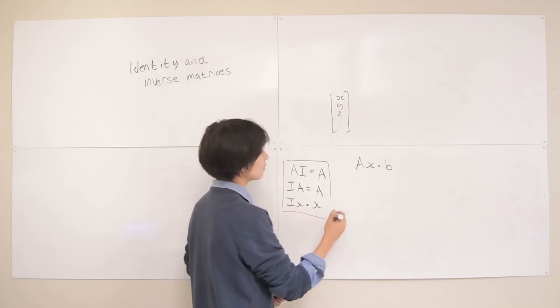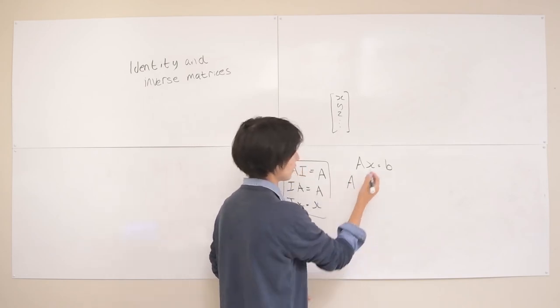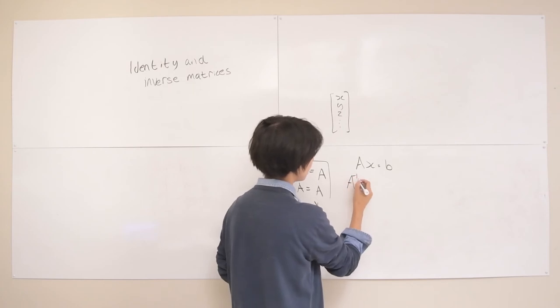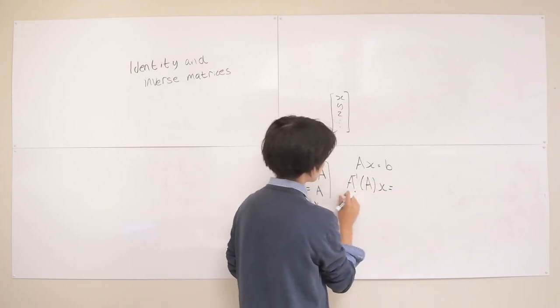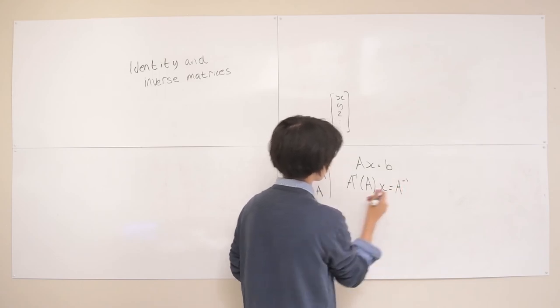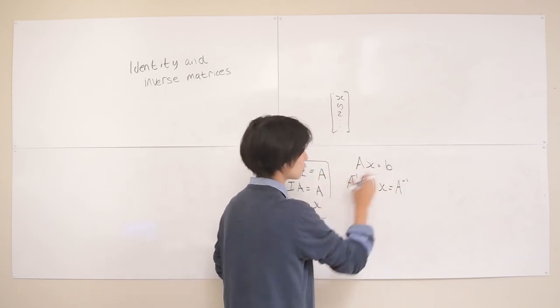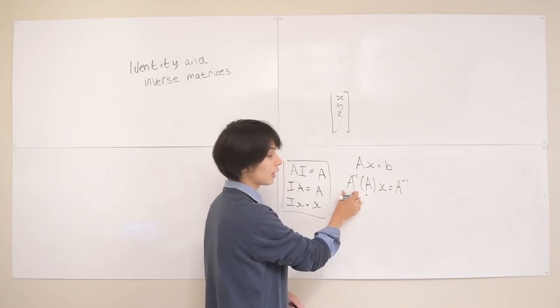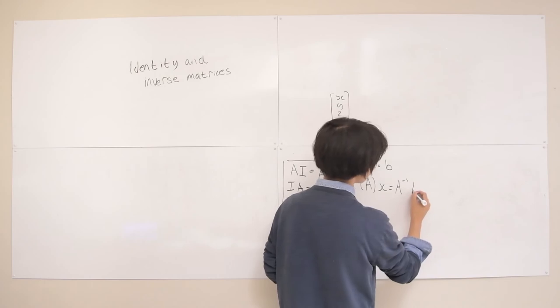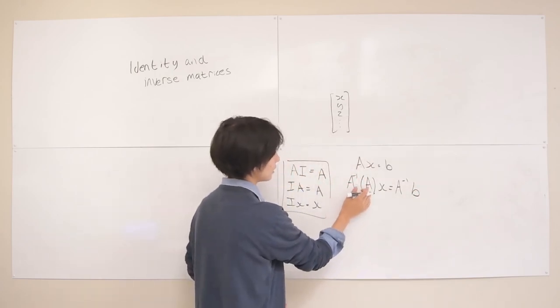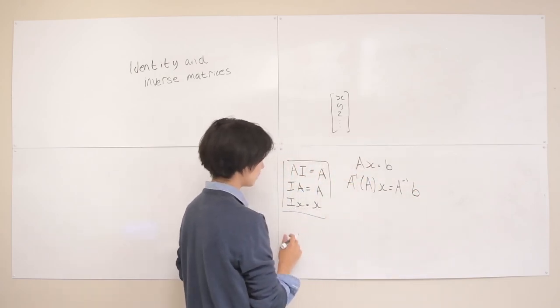You can automatically solve for what X, Y, and Z are by doing a simple matrix inversion kind of algebraic trick here. So if we multiply both sides by A inverse, so the inverse of A, which is our coefficient matrix, then we have this, and then we multiply this side by A inverse. So it's always going to be on the left side, because it does matter which side you're on. So if you multiply by A inverse on the left side, you're going to do it on the left side here. So you get this.